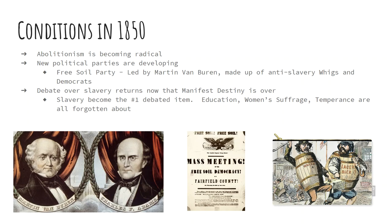There's a new political party called the Free Soil Party — 'free' meaning no slavery. Martin Van Buren, the former president, is going to become the leader of this. There are anti-slavery Whigs, anti-slavery Democrats, and the Free Soil Party is going to become a force in the 1850s. You can see Martin Van Buren from a political campaign rally — he's going to run for president again, with Charles Adams as his vice presidential candidate.